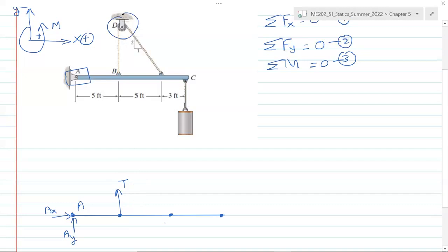Now this pulley is frictionless. Whenever we see that word frictionless pulley, that means the cable at both ends of the pulley has the same tension.